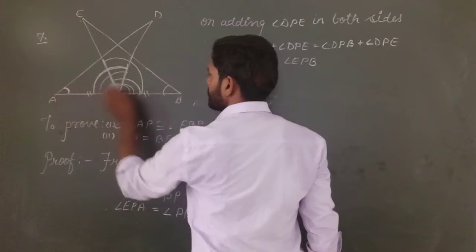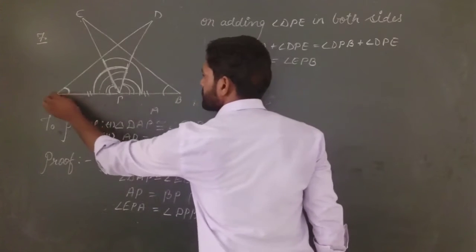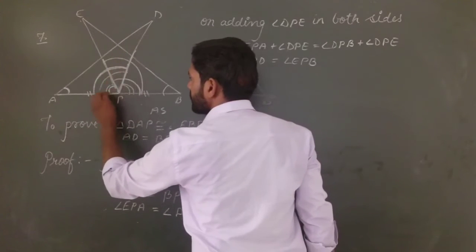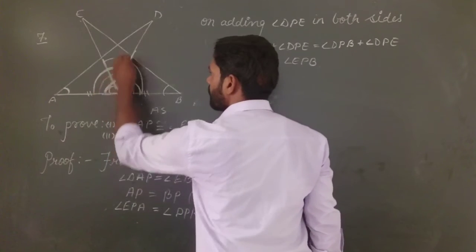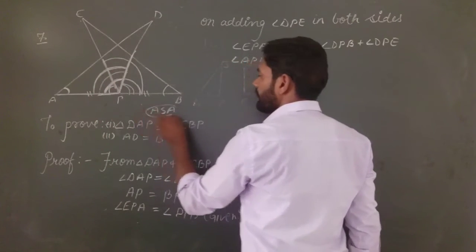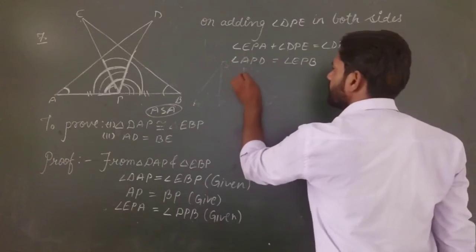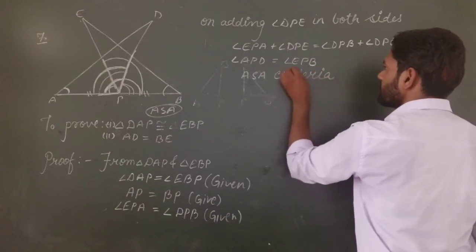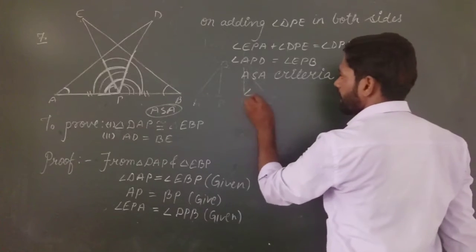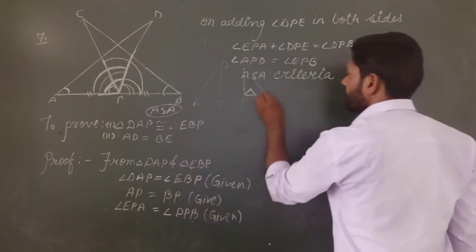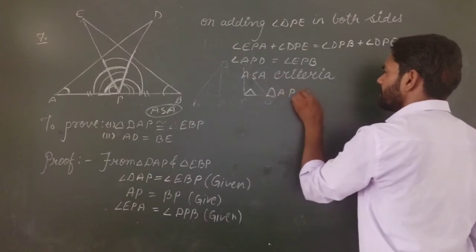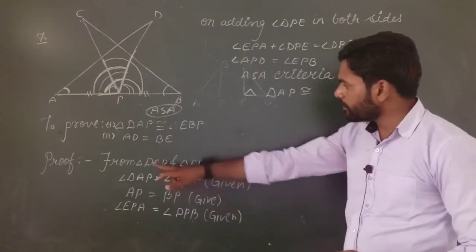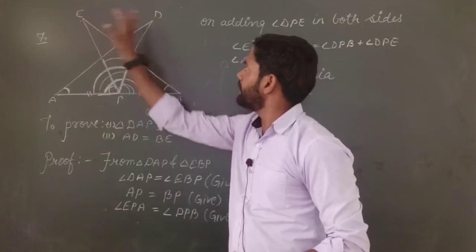So we have verified: this angle equals this angle (angle), this side equals this side (side), and this angle equals this angle (angle). So using ASA criteria, triangle DAP is congruent to triangle EBP. The correspondence is D↔E, A↔B, P↔P.